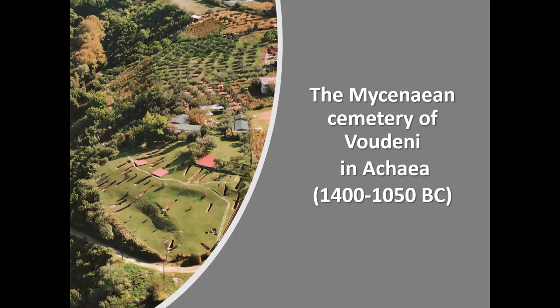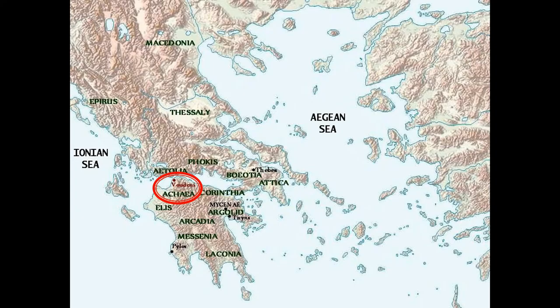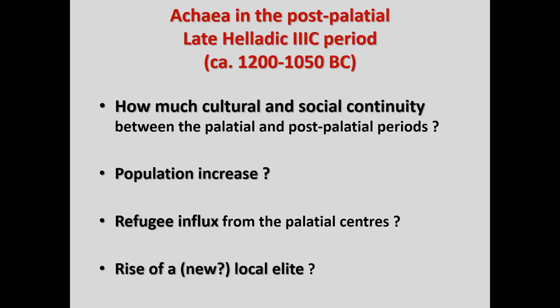My case study is the cemetery of Boudini in Achaia, one of the largest and most interesting Mycenaean cemeteries excavated so far in Greece. Achaia in West Peloponnese is a key region for Mycenaean research, especially because of its role in the last Mycenaean phase — the Late Helladic 3C period that follows the collapse of the palaces. In contrast to what happens in the main palatial regions like Mycenae or Pylos, Achaia seems to flourish during that transitional phase, raising various questions about the social changes that may have taken place there.